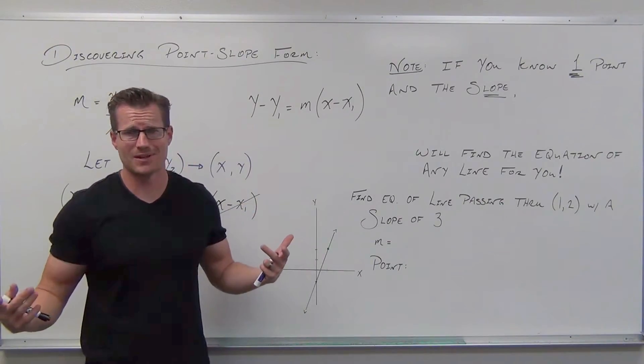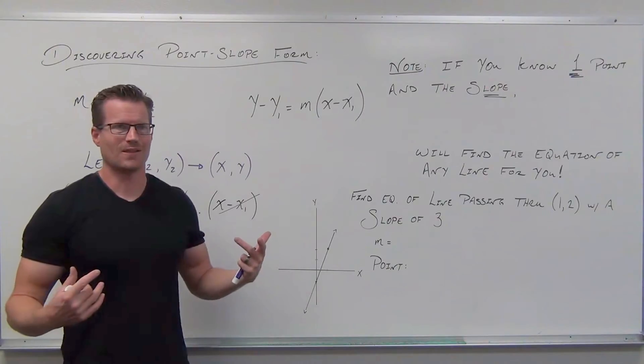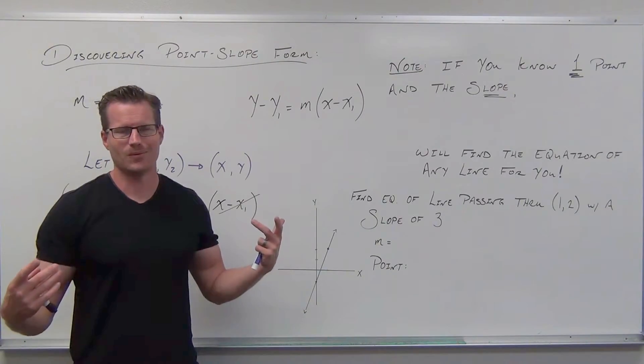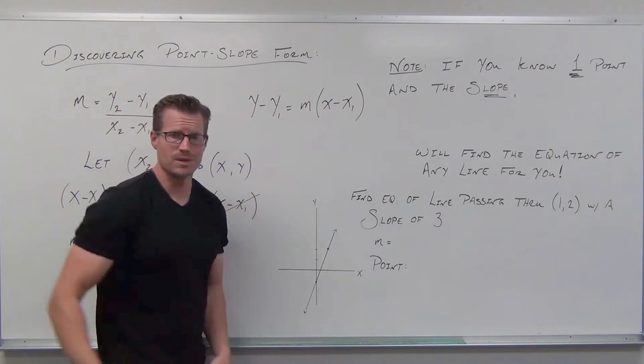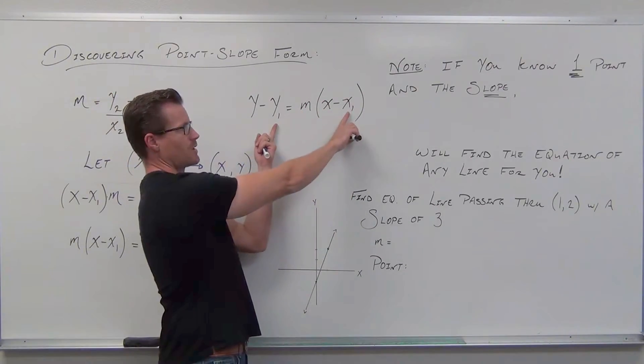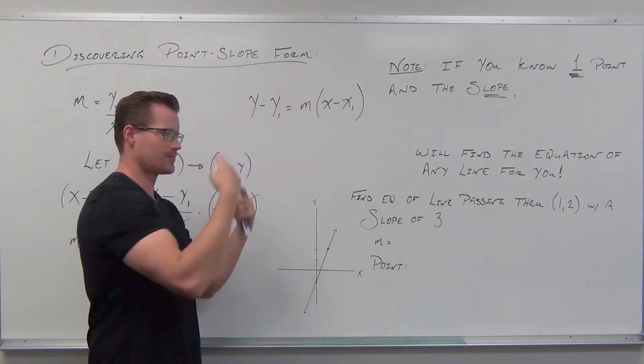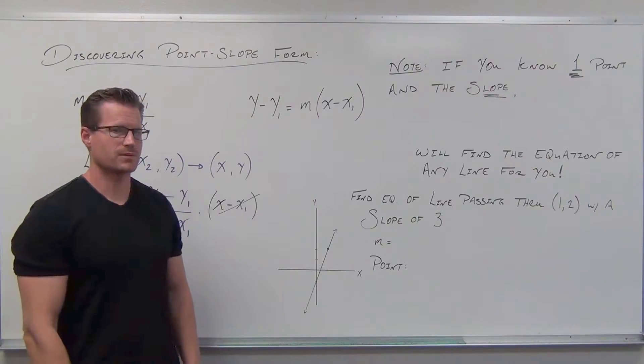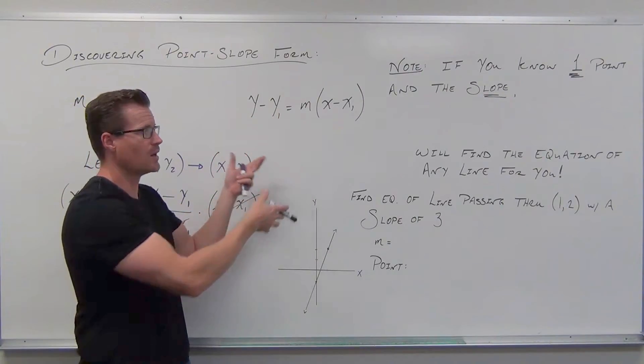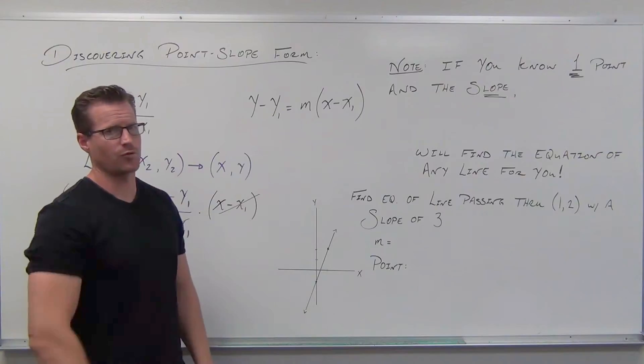This right here is called point-slope form of line for obvious reasons. We're not inventive when it comes to the name. We call it the point-slope formula because this is a point and that's a slope and that finds the form of the line for you. Here's the beautiful part about it.